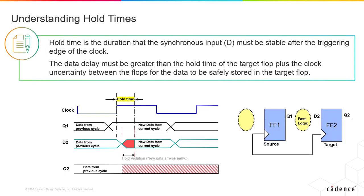In order for your data to be safely stored, the other requirement is your hold time. The hold time is the duration that the D input must be stable after the triggering edge of the clock. The data delay must be greater than the hold time of the target flop plus any clock uncertainty between the flops. This means that your data cannot be too fast compared to the clock. You can correct hold violations by providing some data delay, either by decreasing your clock uncertainty or by adding delay cells. You can reduce skew between the clock trees by using better clock tree generation, and if you constrain your clock trees properly, there won't be any hold violations.